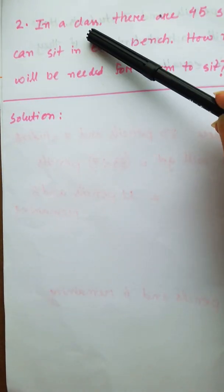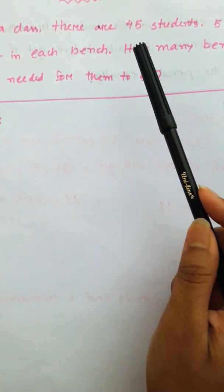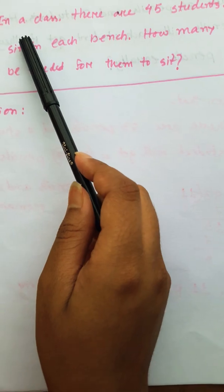In our class, there are 45 students. 5 students can sit in each bench. How many benches will be needed for them to sit?